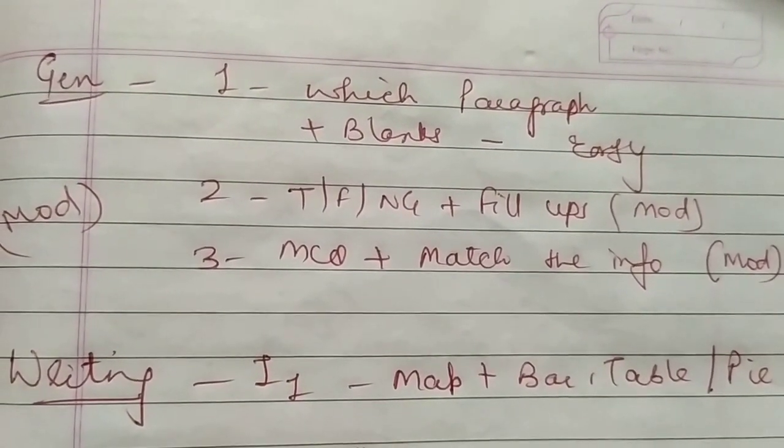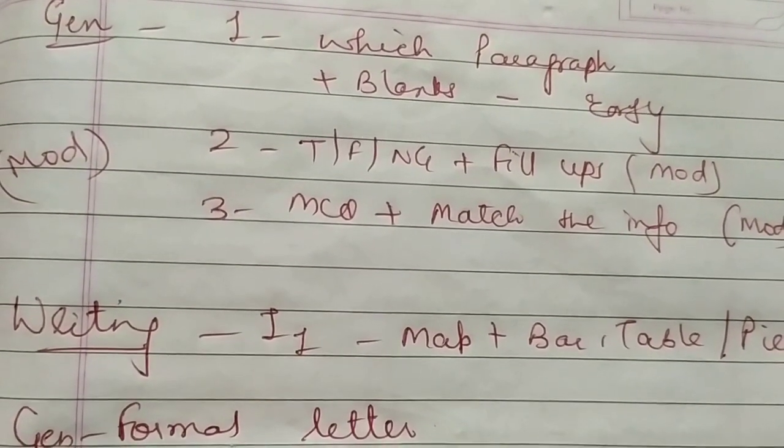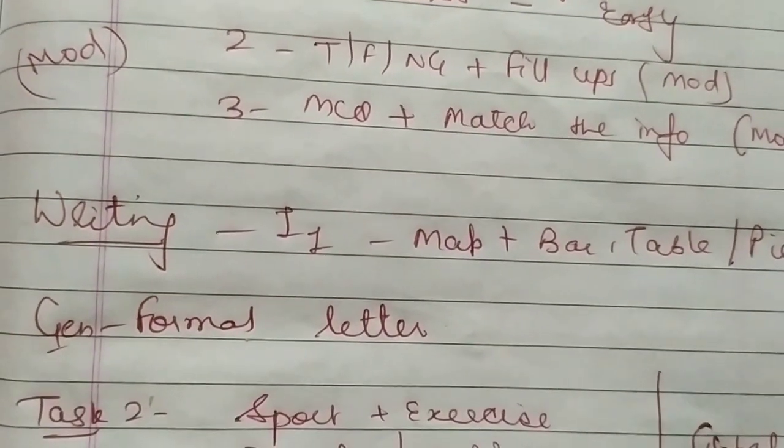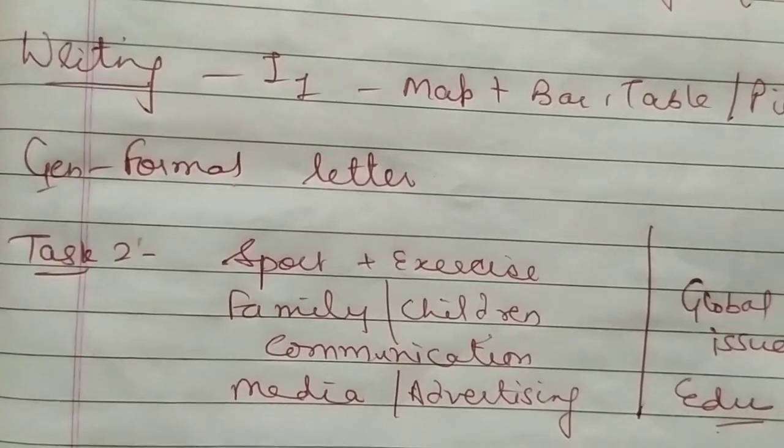Reading passages, we have already told you, are repeating. For general, formal letter for task one. For task two, we have sports plus exercise, family or children, communication, media, advertising, global issues, and education.